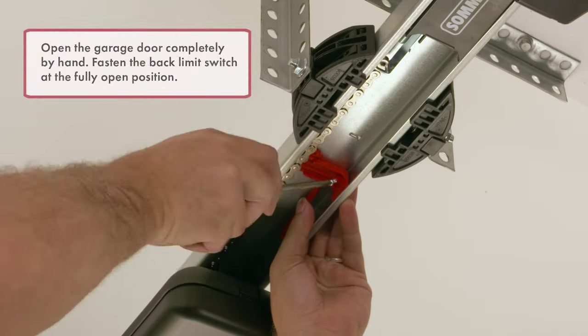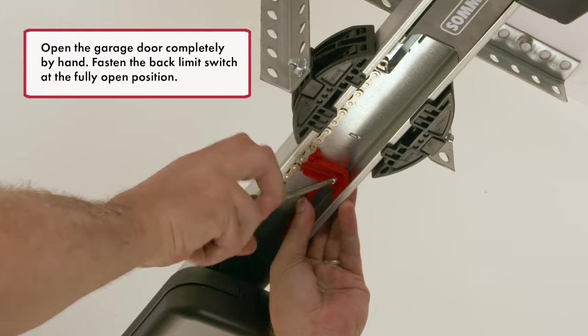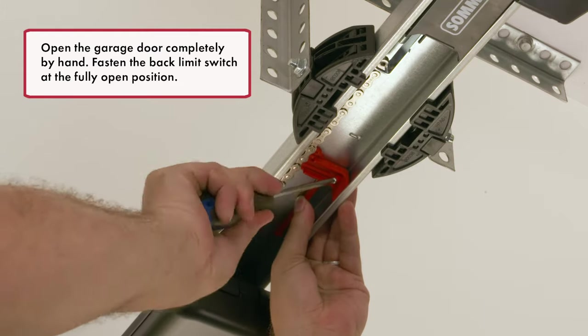Open the garage door completely by hand. Fasten the back limit switch at the fully open position.